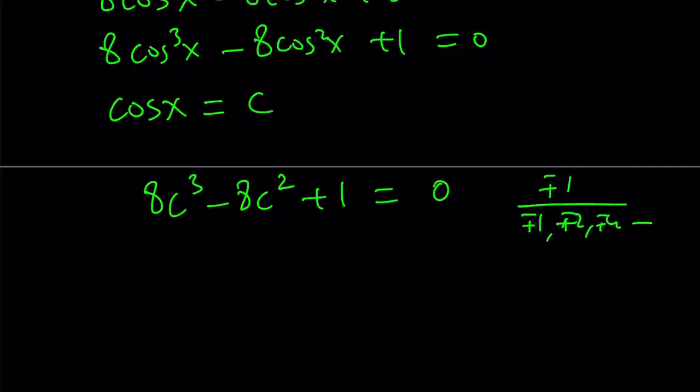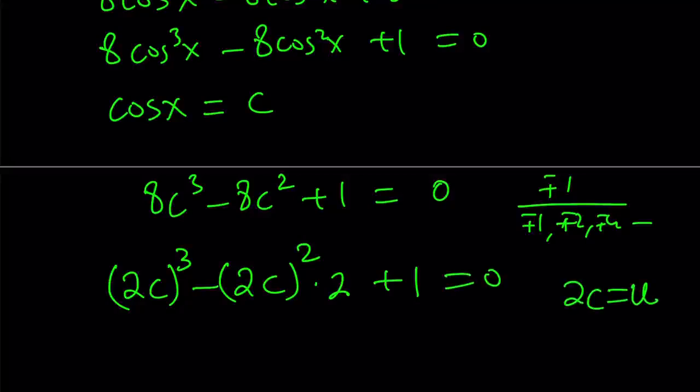First, let's write this as 2c quantity cubed. Now, 8c squared, can I use 2c? And I'm going to say 2c or not 2c. I can do 2c quantity squared, but that's going to give me 4c squared, so I do need to multiply by 2. Now, I'm going to call 2c u. It's going to turn into u cubed minus 2u squared plus 1 equals 0.